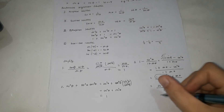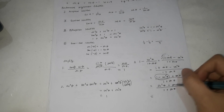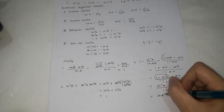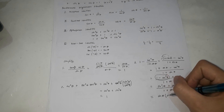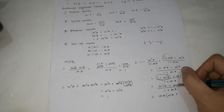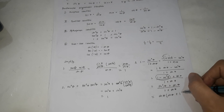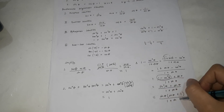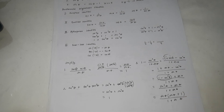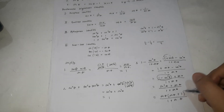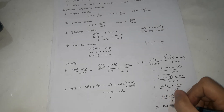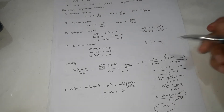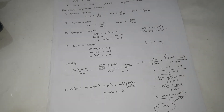Now factor the numerator: sine squared theta plus sine theta. The common factor is sine theta, giving sine theta times (sine theta plus 1) over (1 plus sine theta). Cancel (1 plus sine theta) in numerator and denominator — this is valid because they are added, not subtracted. The result is simply sine theta.